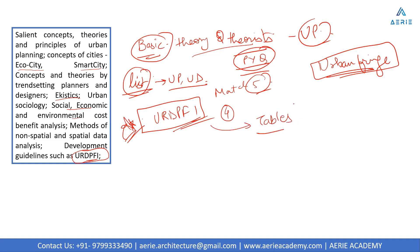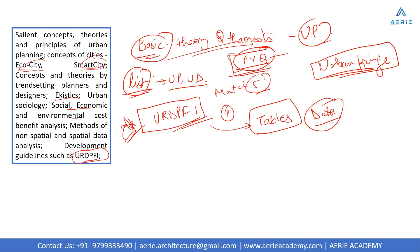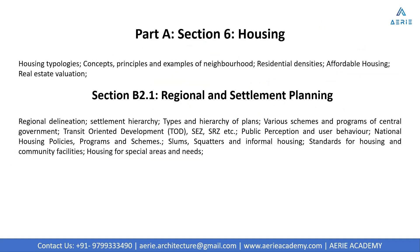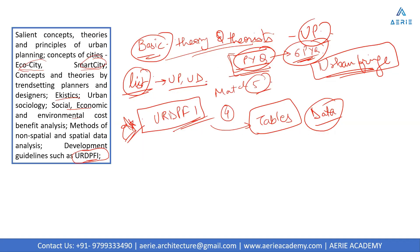There are important tables in URD PFI that you need to cover. Wherever data is given, wherever numbers are given, put extra effort and note those things separately. So for urban planning: cover eco-cities, smart city names, basic theory and theorists, and all theorists who came in at least the last six previous year question papers — that's what you need to cover in urban planning.